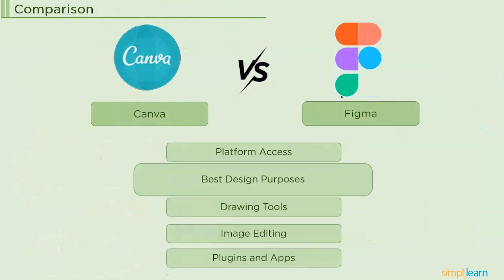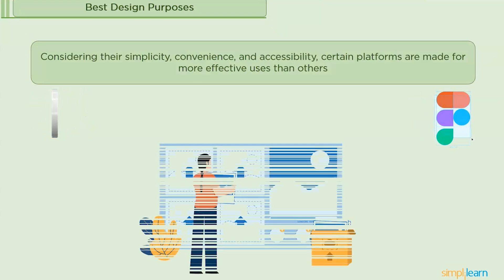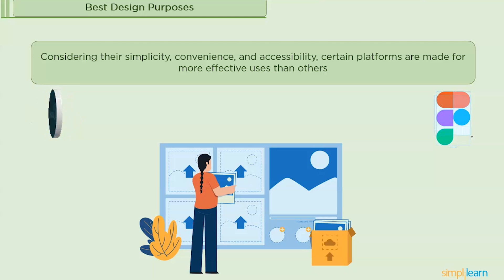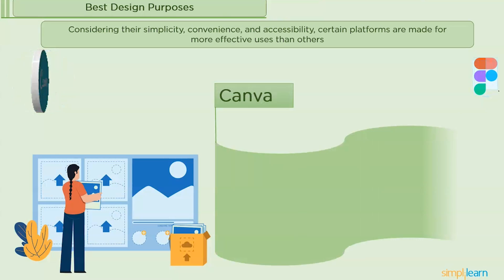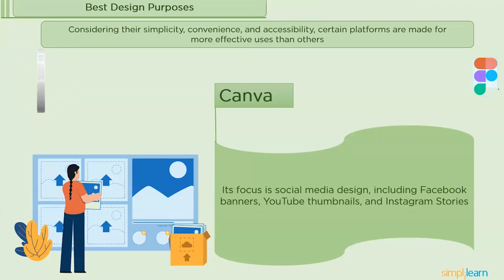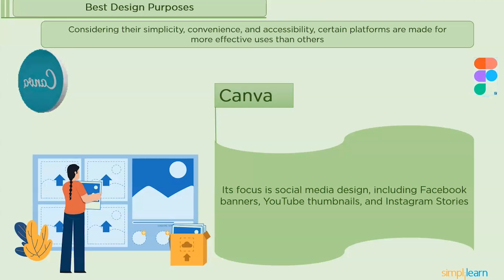The next category is best design purposes. Certain platforms are made for more effective uses than others. For Canva, its primary area of expertise is social media design, including Instagram stories, YouTube thumbnails, and Facebook panels. There are many free themes available for popular social networking sites, and Canva offers easily editable templates for calendars, presentations, and stationery.